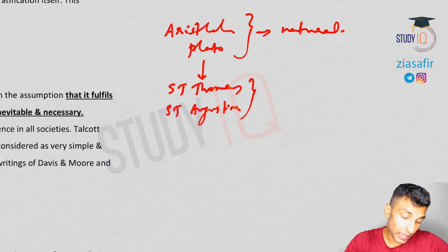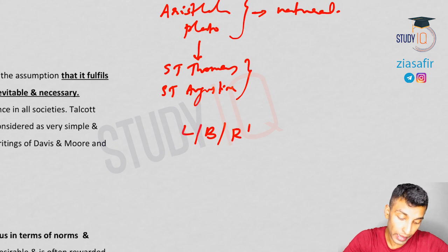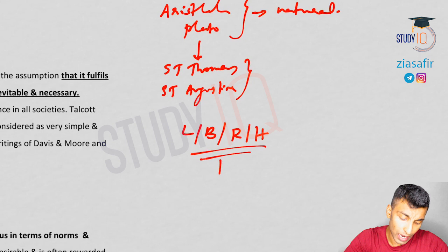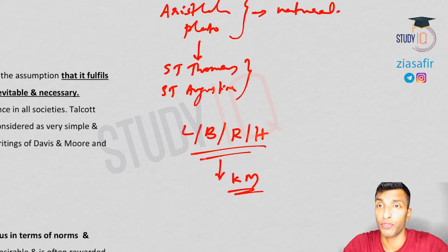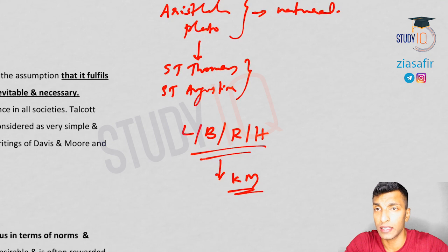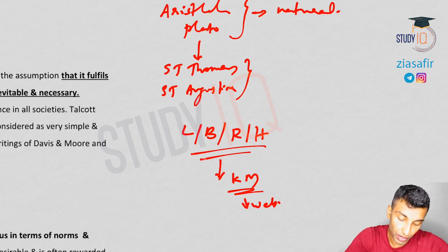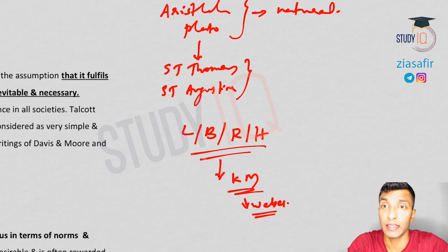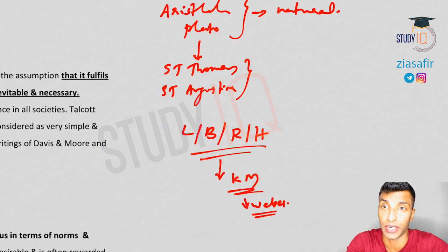Then we talked about Locke, Bentham, Rousseau, Hegel, etc. They tried to understand inequalities as something which is inherent, acquired, or a combination of both. Then we talked about Karl Marx — he talked about inequality in terms of division of labor and gave the solution as communist society, which we will see when we discuss the conflict theory of stratification. Then we talked about the Weberian concept — Weber is using a multi-dimensional understanding of inequality, incorporating not only class-level inequality but also status and power, identifying a multi-dimensional pattern of social stratification.